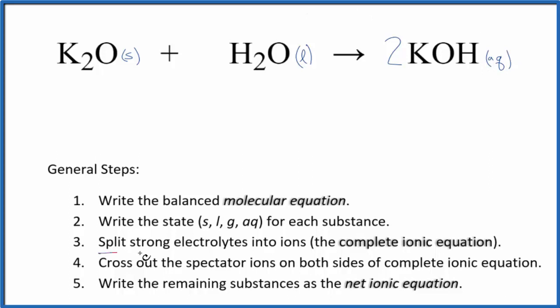Now we can split the strong electrolytes into their ions, and that will give us the complete ionic equation. For the potassium oxide, since it's a solid, we don't split solids apart in net ionic equations. So we're going to keep that together.